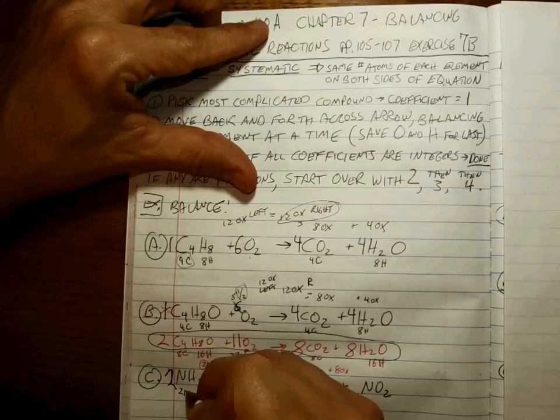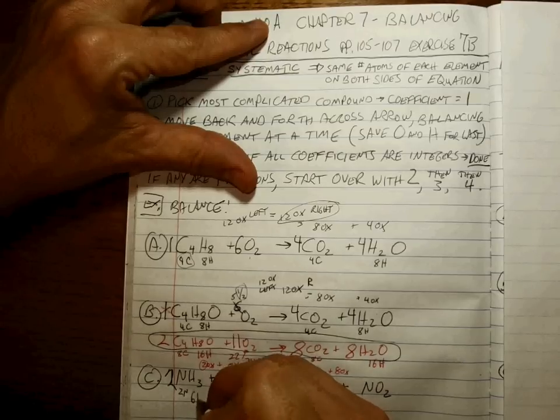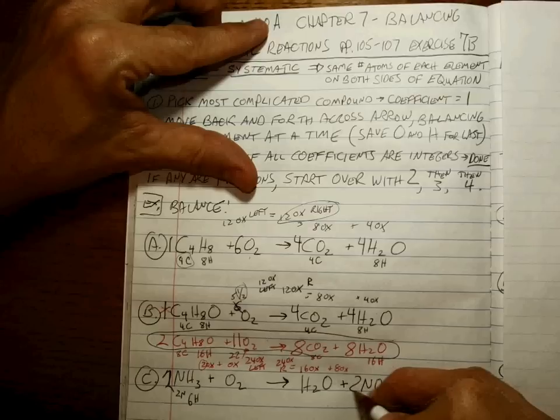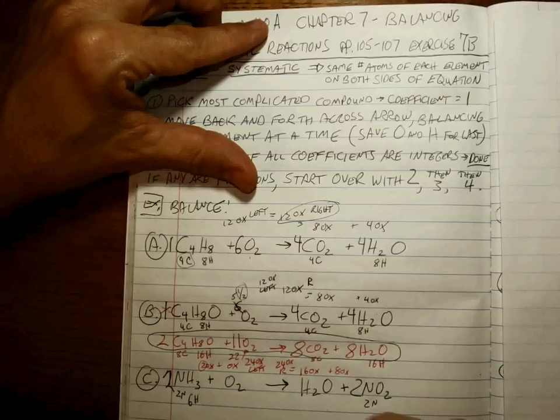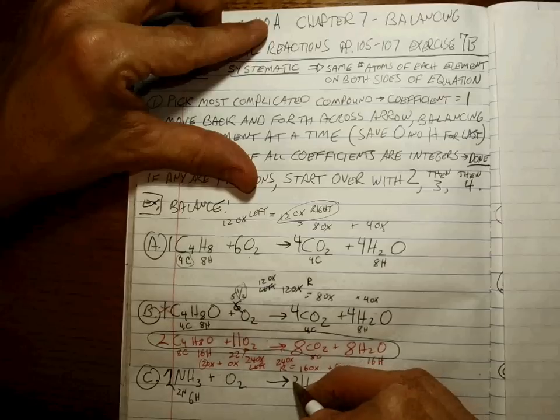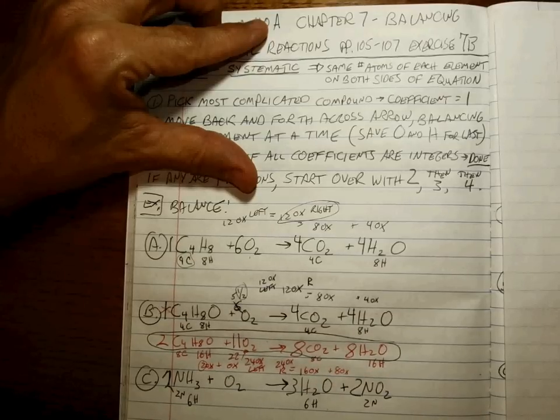So let's try 2. If there are 2, that means 2 nitrogens and 6 hydrogens. Therefore, this would have to be 2 nitrogens. And to get 6 hydrogens, that would have to be a 3.